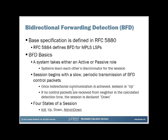We'll show you how to configure the periodic transmission time as well as when you detect a neighbor to be down. There are four states of a session: init, which occurs when a session is attempting to come up; up, when there's full bidirectional communication; down, when communication is lost between neighbors; and admin down, which can be manually triggered at either end.